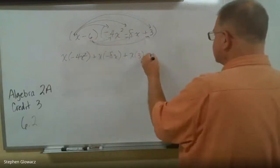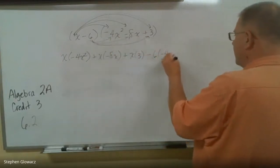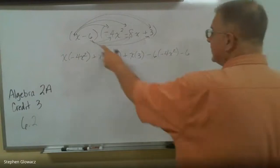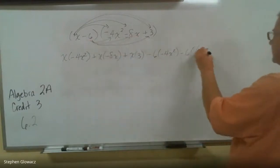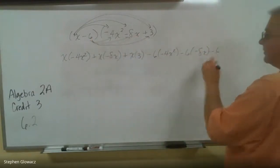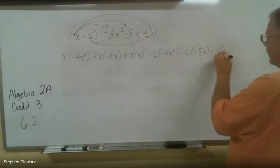Now negative 6 to everything: negative 6 times negative 4x², negative 6 times negative 8x, and negative 6 times positive 3.